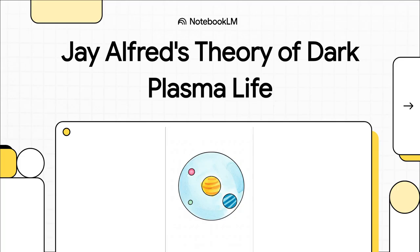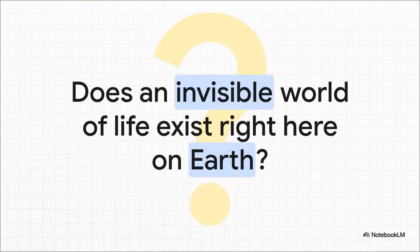The title's a mouthful: Creation of Minimal Plasma Cell Systems by Self-Organization in Earth's Dark Biosphere. But what it's really doing is building a step-by-step scientific case for an idea that is pretty out there. So get this, does an invisible world absolutely teeming with life exist right here on Earth? I know, it sounds like something straight out of a sci-fi novel.